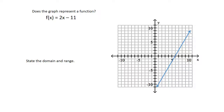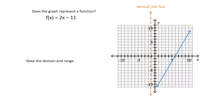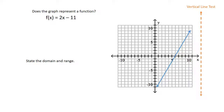Let's look at a few examples. Does the graph represent a function? The equation is f(x) = 2x − 11. The line is shown on the graph, and we're going to take a vertical line test and pass it over the entire graph — it only passes through once at any given point. So we're going to say yes, this one is a function.